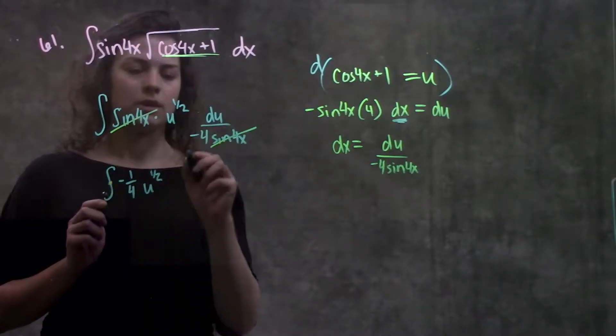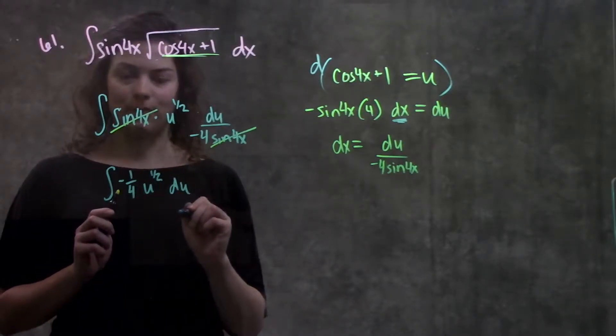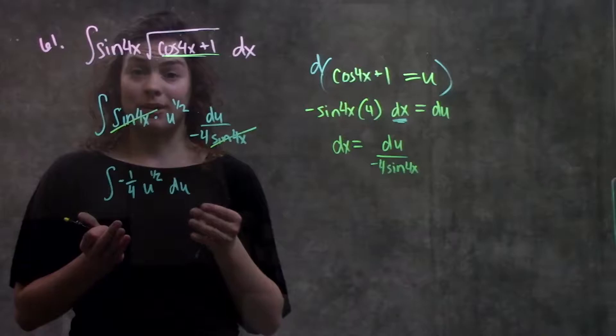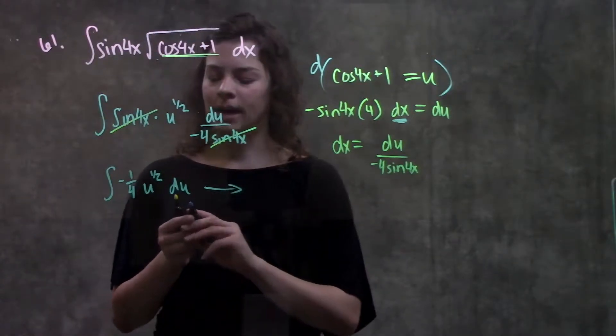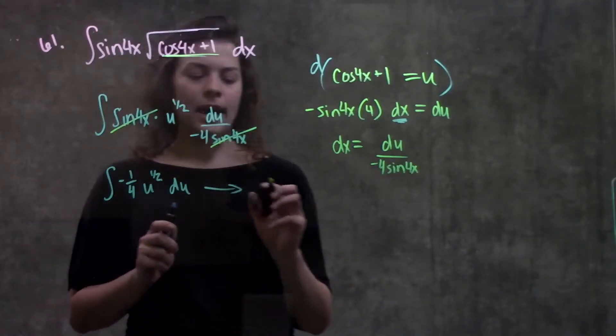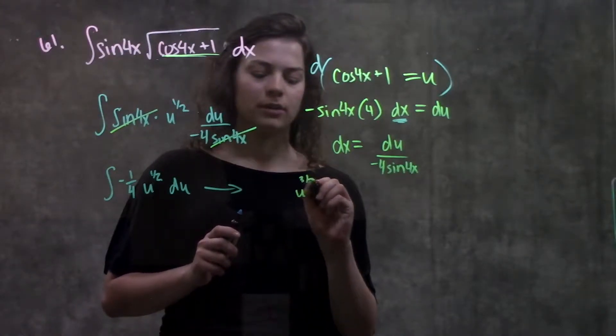And this is something I know how to take the integral of. So I'm just going to use my integral rules that I've been using the entire chapter. I add 1 to the exponent, so this becomes u to the 3 halves.